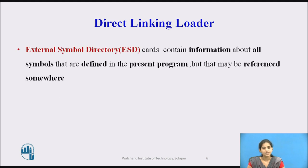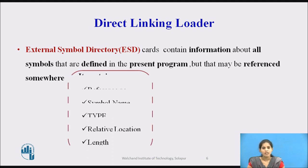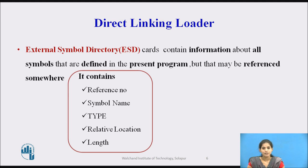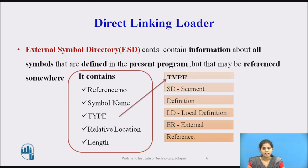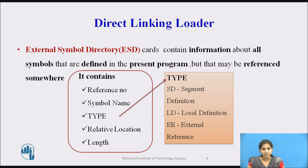The External Symbol Directory (ESD) card contains information about all the symbols that are defined in the present program but may be referenced somewhere else, and also all the symbols that are referenced in this program but defined elsewhere. The ESD card contains the reference number, symbol name, type, relative location, and length. The type may be SD (segment definition), LD (local definition), or ER (external references).